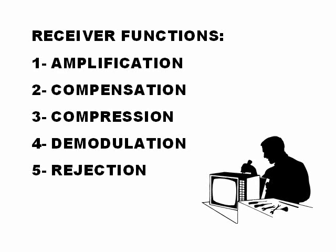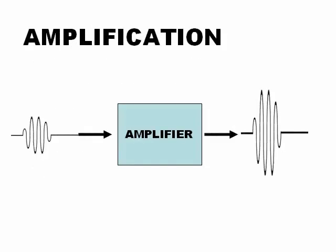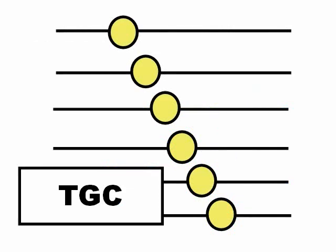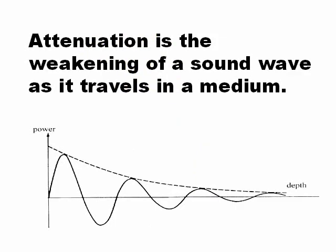There are different functions of the receiver: amplification and compensation, which are operator adjustable, and the others — compression, demodulation, and rejection — are in general automatic. Amplification is to make the signal bigger. Compensation is the time gain compensation, which provides different amplification at different depths to compensate for the normal attenuation of ultrasound as it goes through tissue. Some machines have automatic compensation, but the time gain compensation control is still there and you can make some changes. Other machines have no automatic compensation, so you always need to compensate with time gain compensation.